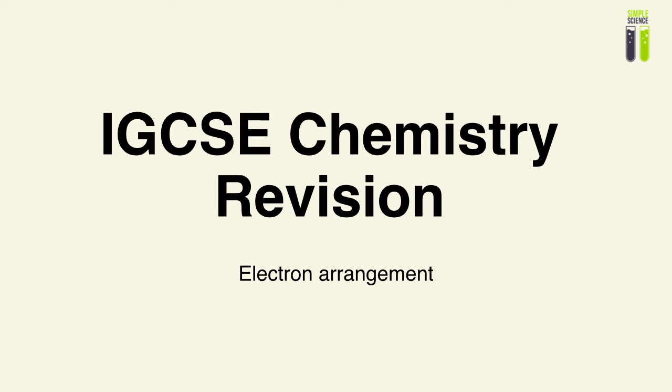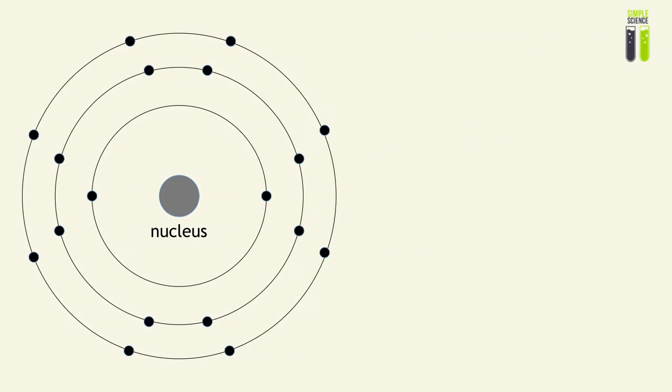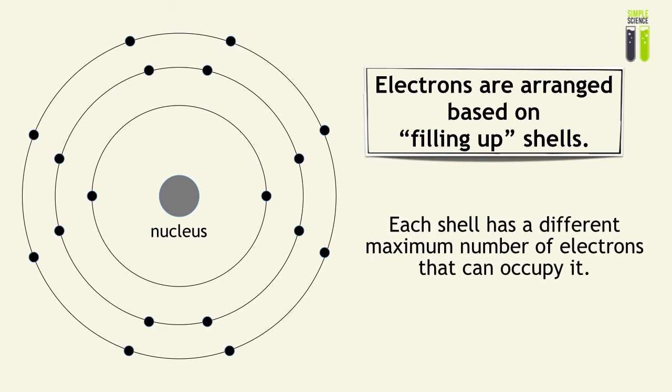In this video, we are going to look at how electrons are arranged around the nucleus of an atom. When we look at the nucleus of an atom, we see electrons orbiting around it and they're distributed based on a set of principles in that the maximum number of electrons in which a shell can occupy is generally different.